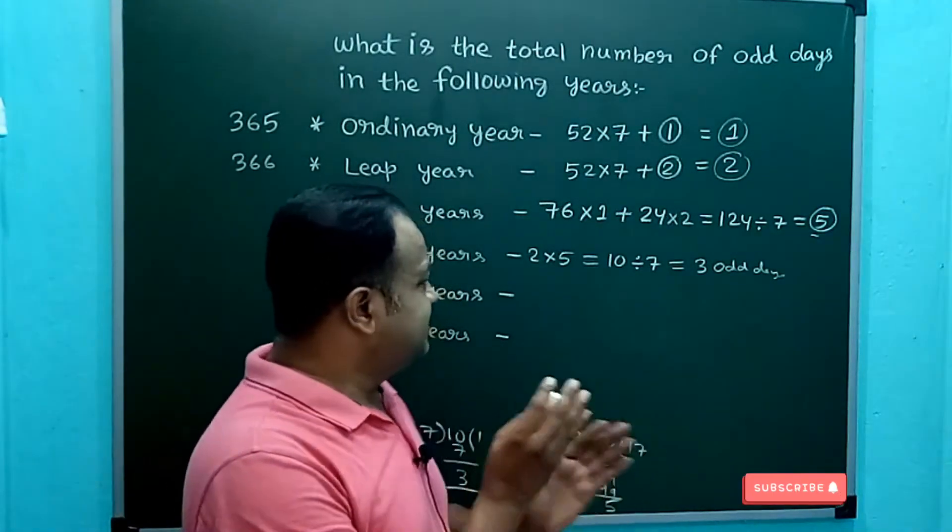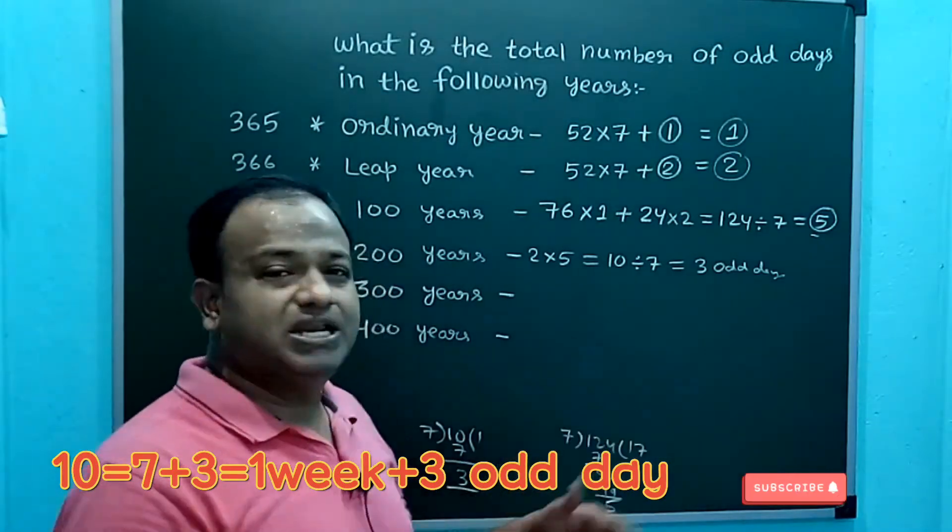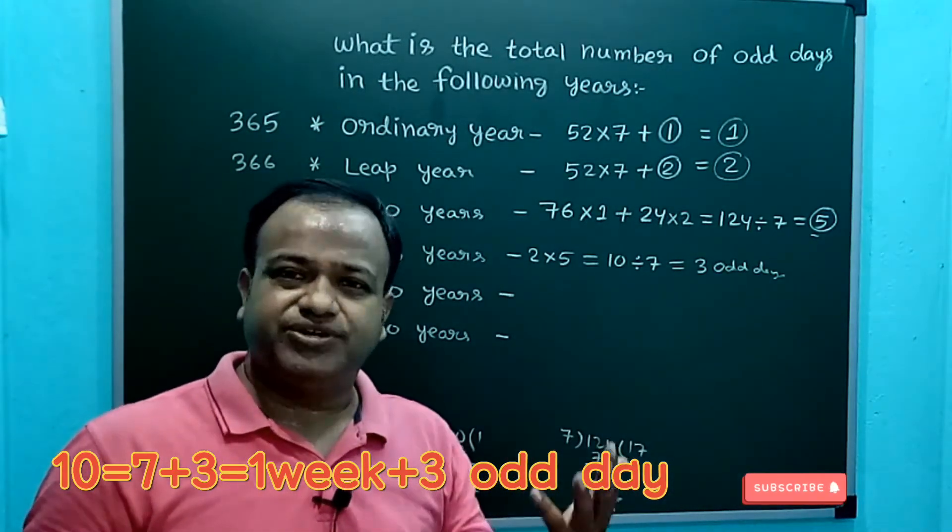You can also think of it this way: there are 10 days. 7 days make a group of a week, so we are left with only 3 days. So 3 odd days.